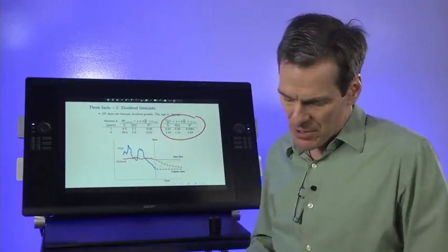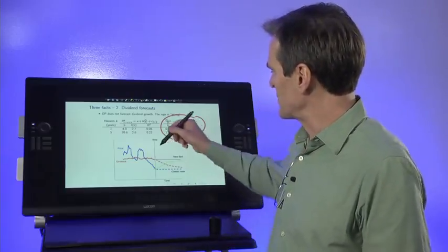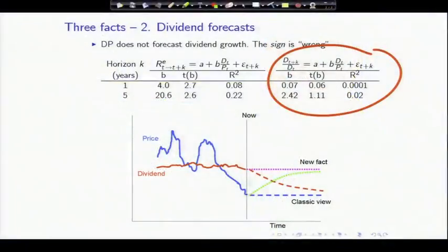The graph below puts these facts together. What we were expecting: if you see prices fall below dividends, you might have expected that means dividends will fall in the future. This is the dividend growth forecastability and doesn't really mean much about returns. What we're seeing in the facts is that a low price relative to dividends means nothing about where dividends are going to go, but means prices or returns will be high. So in that sense, it's changed our view of what varying prices means 100%. That's an economically large change.